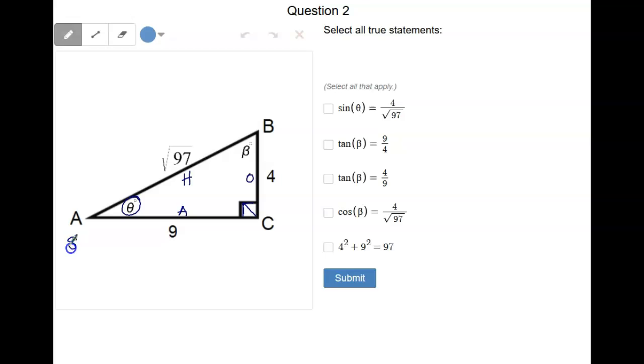So we know that sine of theta has to be the opposite over the hypotenuse and in this case sine of theta is equal to 4 over the square root of 97. So yes, this one would work.